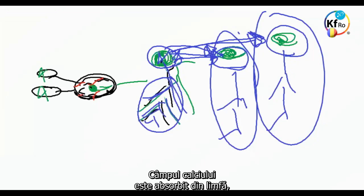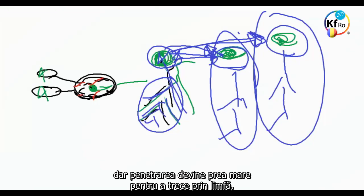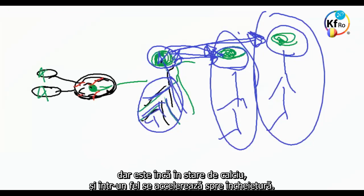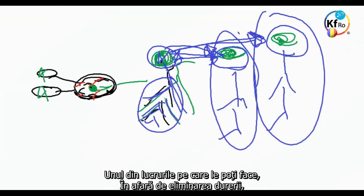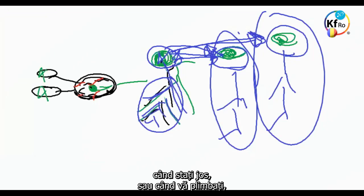The field of the calcium is absorbed from the lymph. But the penetration, it becomes too big to go through the lymph, but it's still in the calcium state. And in a way, it splits up towards the joint. And one of the things you can do, now that you are relieved of the pain, when you're sitting down or when you're walking,